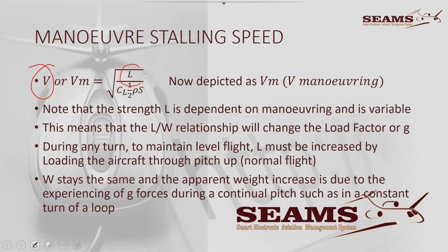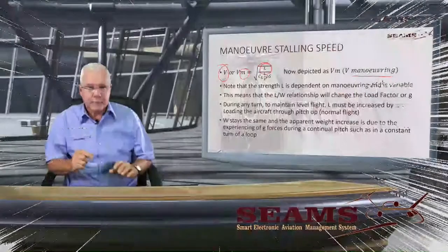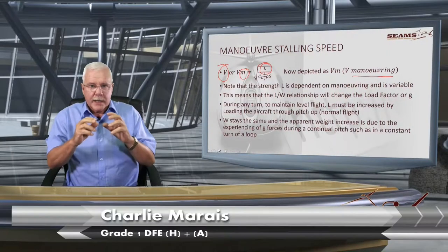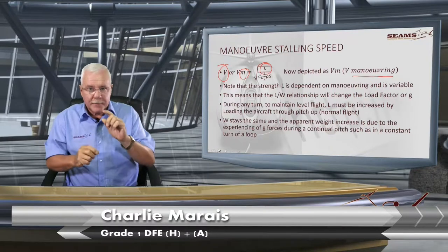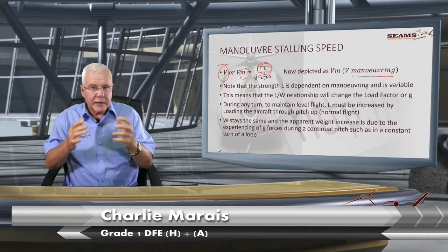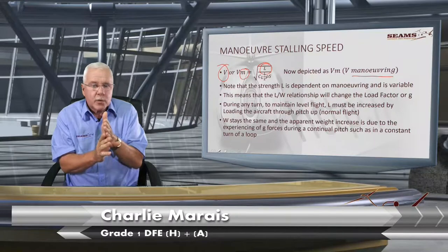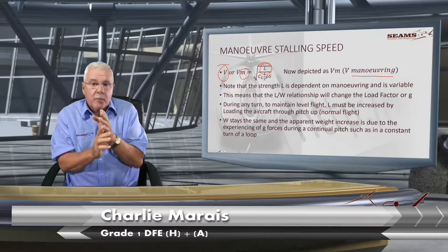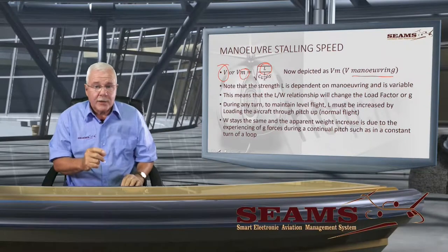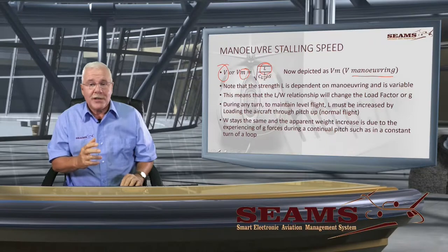We're going to take this V, and because there's a variable lift, we're going to call it Vm, or V-maneuvering. Remember that in basic stalling speed, lift will always be equal to weight until it cannot be — and that's where you get your basic stalling speed. But maneuvering stalling speed is very dependent on how many G's you pull.